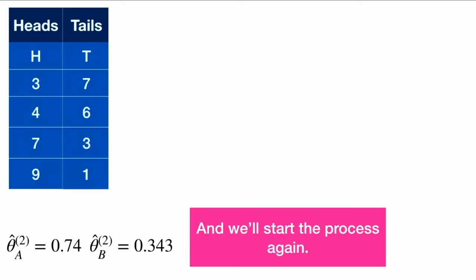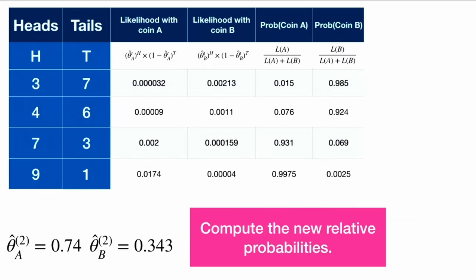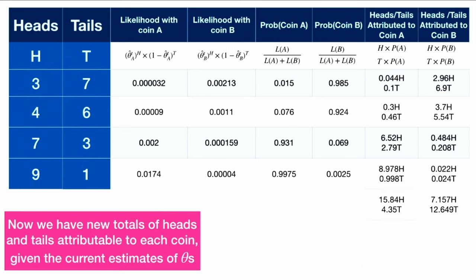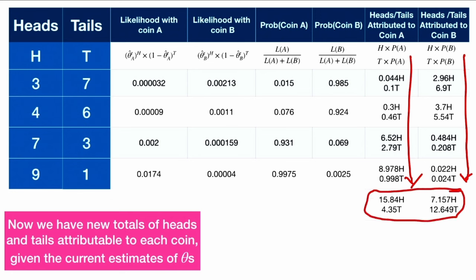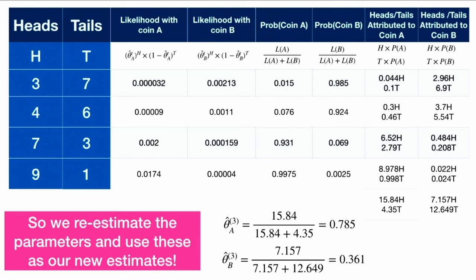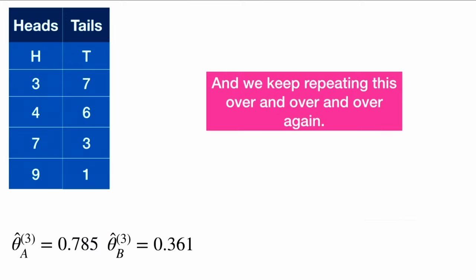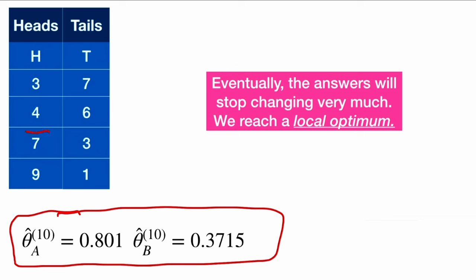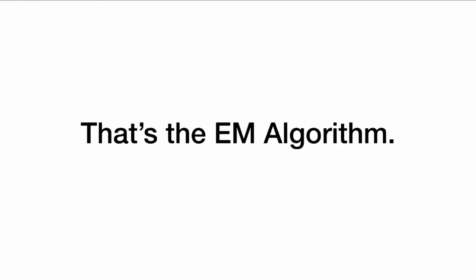We repeat the same process: compute likelihoods given the new estimates, compute new relative probabilities, portion out heads and tails between coins, tally up totals attributed to each coin, and get a new estimate. We keep repeating over and over until our answers settle down. After 10 iterations, theta_hat_A is around 0.8 and theta_hat_B is 0.37 — and that is the EM algorithm.